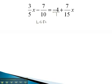Now we can find the least common denominator of 5, 10, and 15. This will be 30. So we will multiply each term by 30, all the way across.